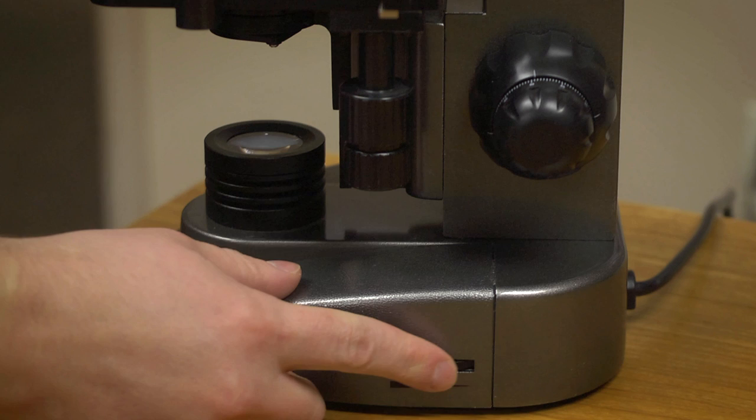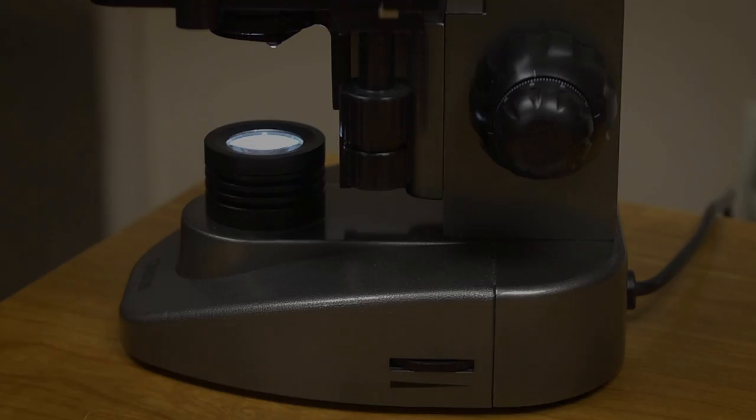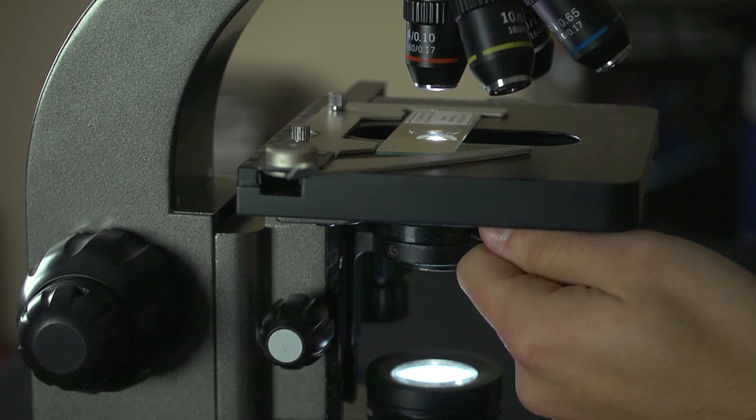As for controlling your light source, you're able to adjust the LED to any setting that you'd like. To give you even more control of your light, the MS-160 includes a built-in iris for regulating how much light passes through the slide.